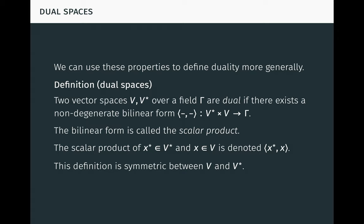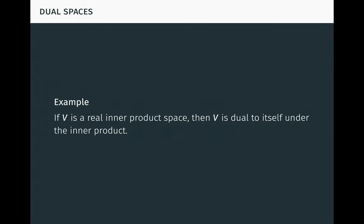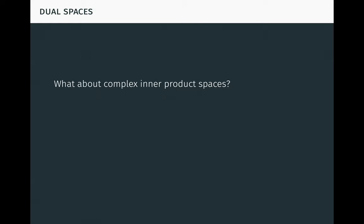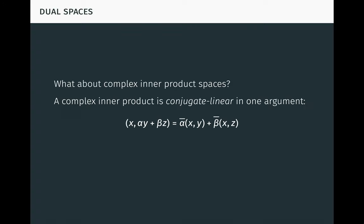Let's now look at some examples of dual spaces. First, if V is a real inner product space, then V is dual to itself under the inner product, as we've already seen in the case of R3. The question naturally arises: what about complex inner product spaces? Recall that a complex inner product is conjugate linear in one argument, as seen here. So technically it is not a scalar product. However, we can work around this issue.